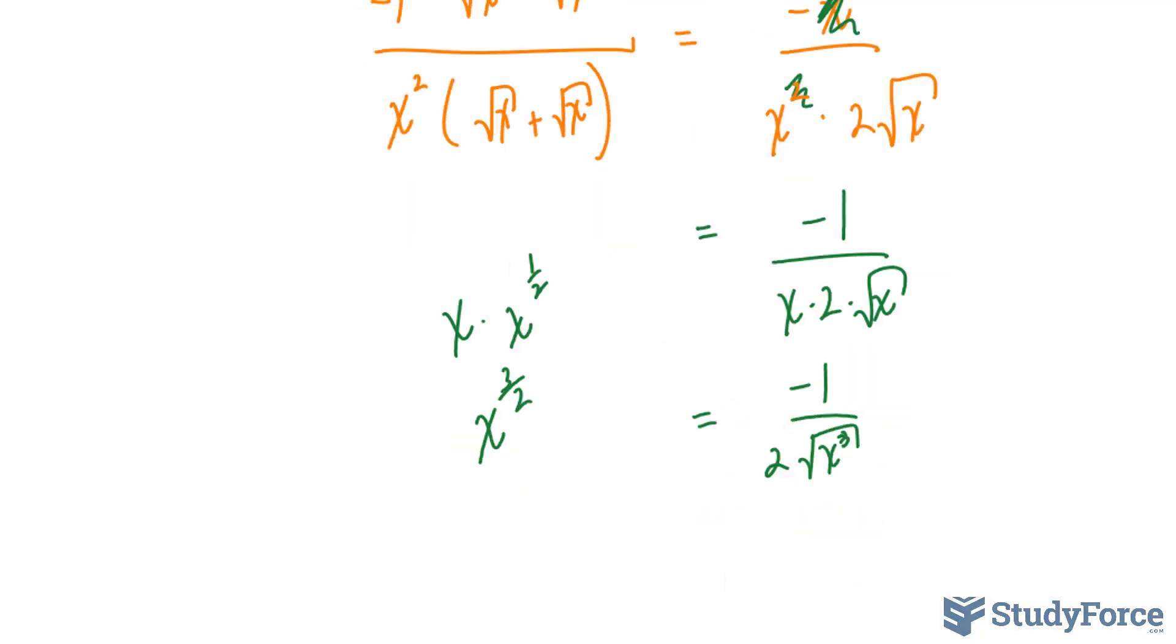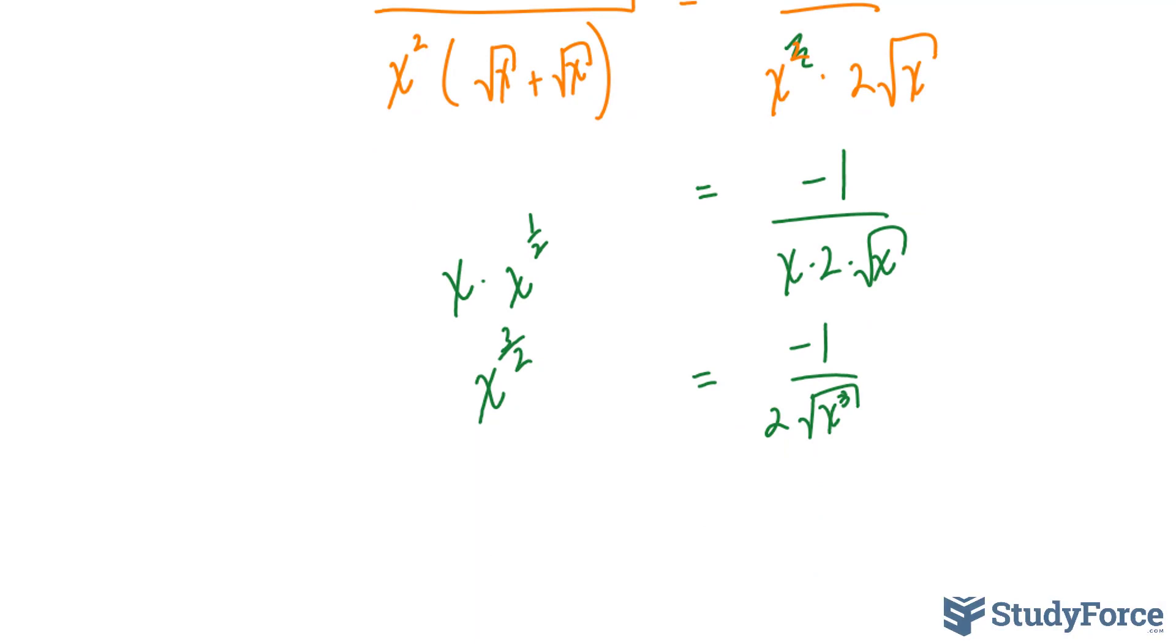Although you might not see it as the answer in your book, you might see it written differently because you can rationalize the denominator. You can rationalize the denominator by multiplying the top and the bottom by the square root of x.